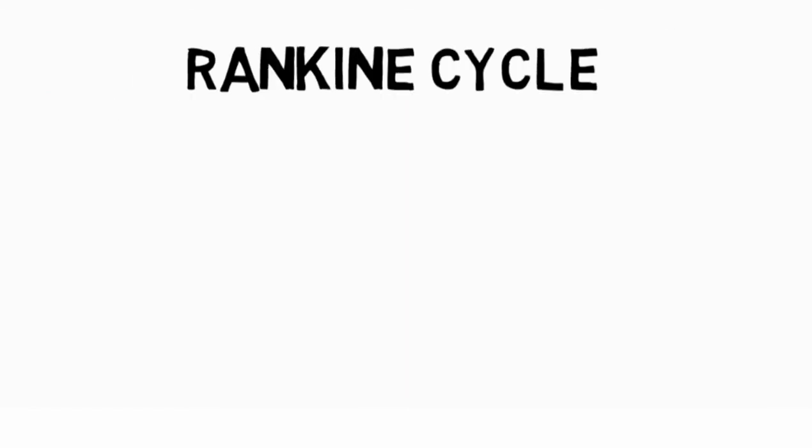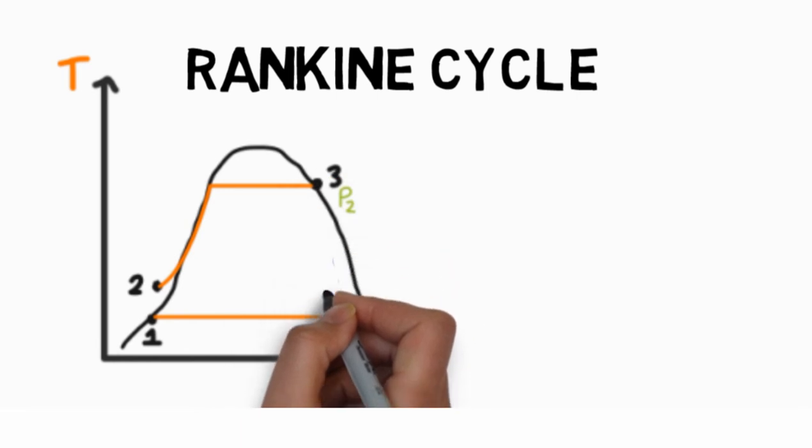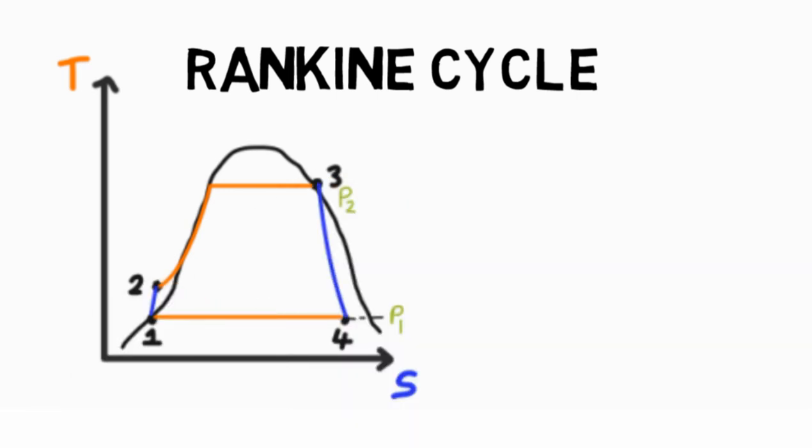Next comes the Rankine cycle. There are four processes in the Rankine cycle: two isobaric (constant pressure) and two isentropic (constant entropy).